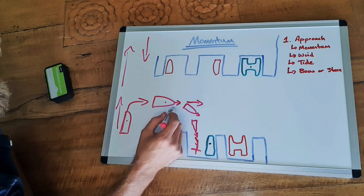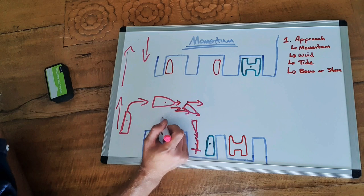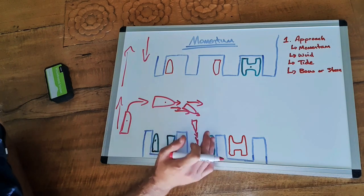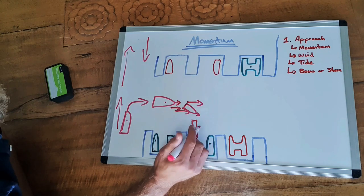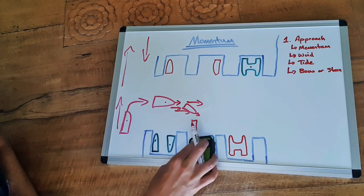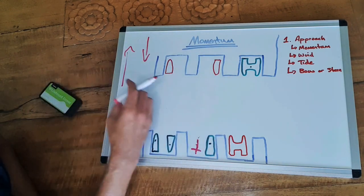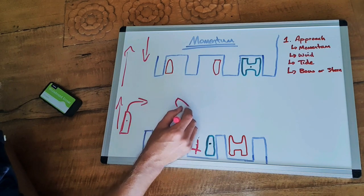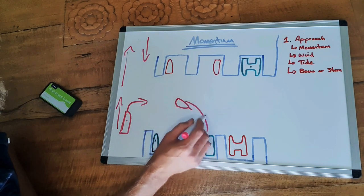But we also have the leftover momentum from when we were traveling this way. Remember that our vessels weigh a couple of tons at least. And that momentum will be causing, as we do this turn, the boat to somewhat slide, like that.